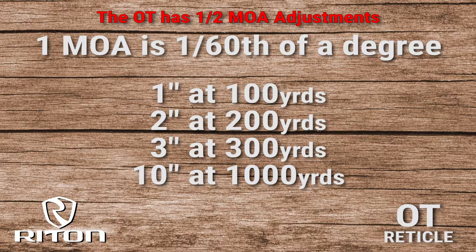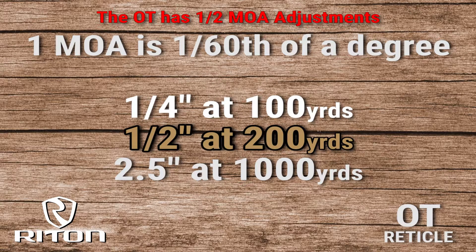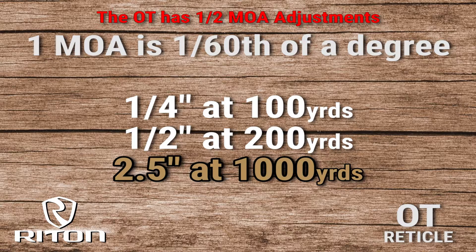Many Ride On Optics have quarter minute of angle adjustments. Those adjustments will be one quarter of an inch at 100 yards, one half an inch at 200 yards, and at 1000 yards one click — one quarter minute adjustment — equals 2.5 inches.